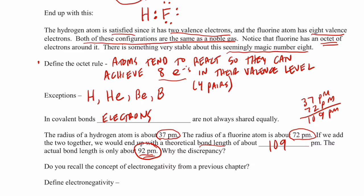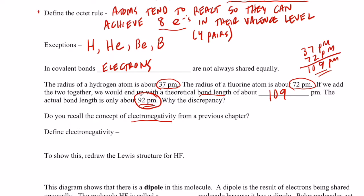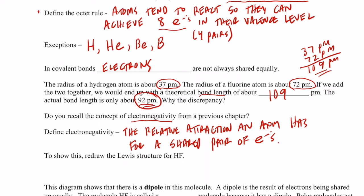So the question is, why is that bond length shorter than what we would expect it to be? And that deals with a concept called electronegativity. And that's from a previous chapter. Let's redefine that again in our notes here. As you might recall, electronegativity is the tendency, or I should say the relative attraction an atom has for a shared pair of electrons. Do you remember we said fluorine had a very high electronegativity. It's up and to the right on the periodic table. And an atom like francium would have a very, very low electronegativity. It's down and to the left.